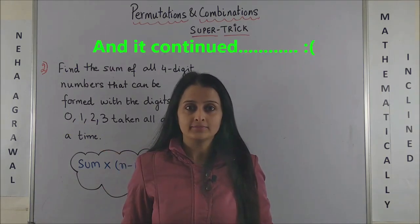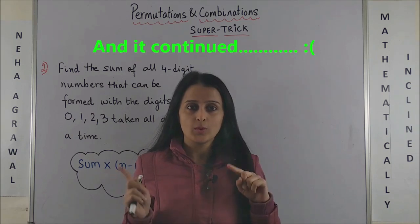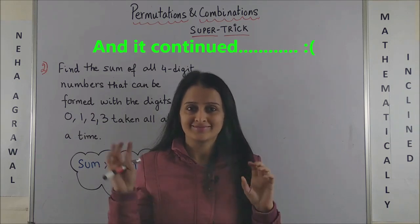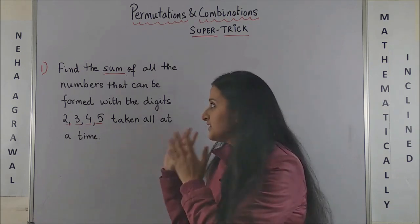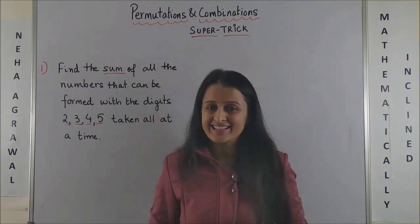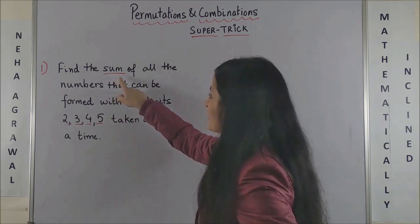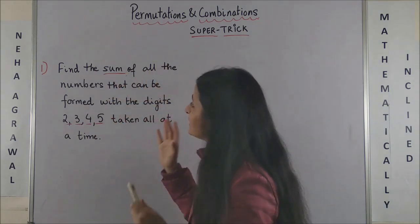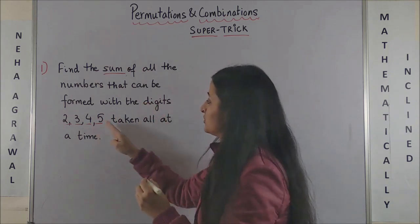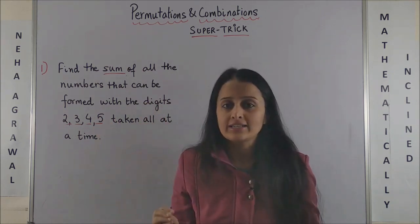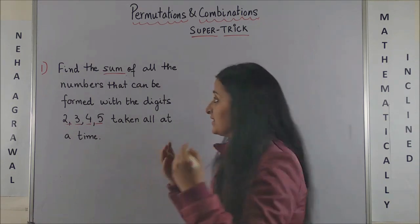Hi everyone, the magic to solve these questions in 10 seconds: when you come across the question find the sum of all the numbers that can be formed with the digits 2, 3, 4, 5 taken all at a time, this means you have to create a four-digit number where all the digits are different or distinct and then find the sum.